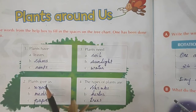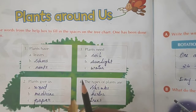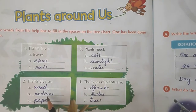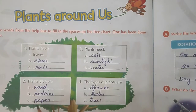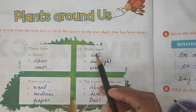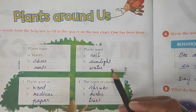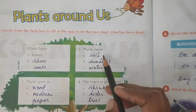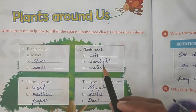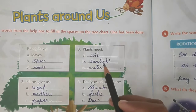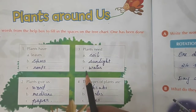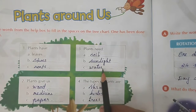The things plants give us include wood — spell W-O-O-D — medicine — spell M-E-D-I-C-I-N-E — and paper — spell P-A-P-E-R. The things plants need to grow are soil — spell S-O-I-L — sunlight — spell S-U-N-L-I-G-H-T — and water — spell W-A-T-E-R.